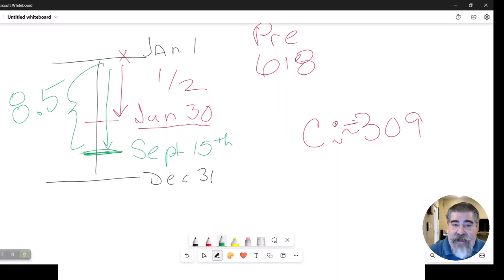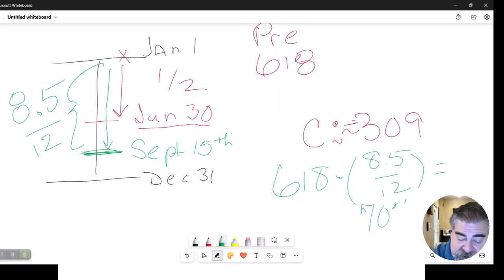Now you can figure that and go, it's $618 times the percentage of whatever eight and a half divided by 12 is. And you go to your Siri calculator and go, hey, Siri, what's eight and a half divided by 12? Now, this is about 70% of the way through.